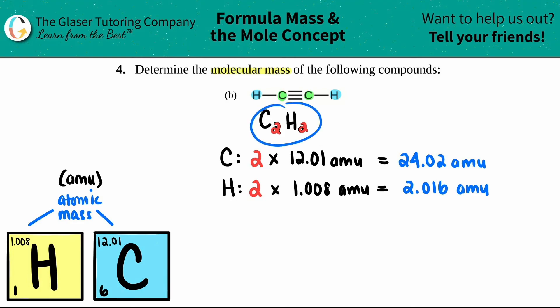And now if I want to find out the total molecular mass, what do I have to do with these numbers? Yeah, I got to add them up because that would be the total. I'm adding the two parts up. So 24.02 plus 2.016, I get 26.036 AMU. And that, my friends, is the final answer. That is the total molecular mass of my acetylene, which is C2H2. And that's it.